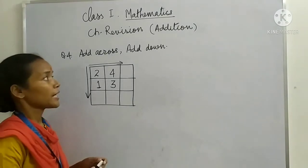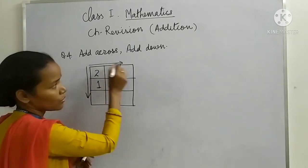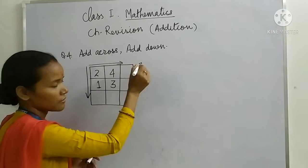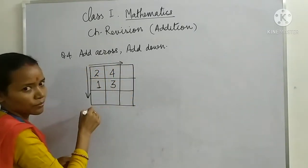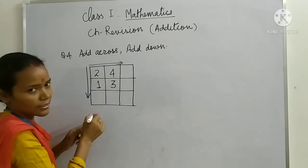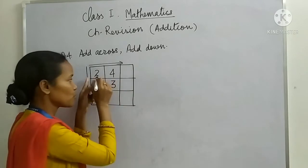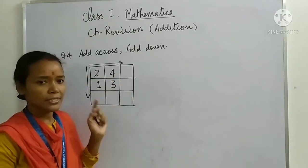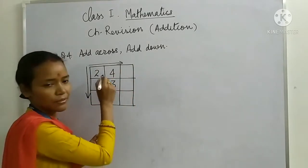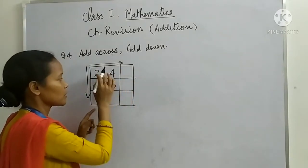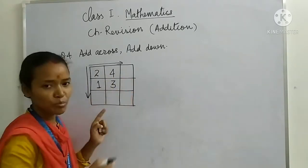So question number 4 is add across add down. It means you have to add from left to right. Across means left to right or horizontal way. And add down top to bottom, or vertical way. Add across you have to first add across, 2 plus 4. So let's try to understand. Whenever you get add across add down, you will get 9 boxes. In these 9 boxes, 4 boxes will be filled and 5 boxes you have to find out the numbers.